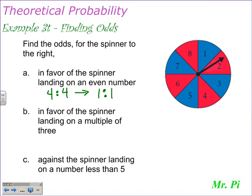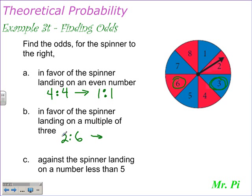In example B, we need to find the odds in favor of the spinner landing on a multiple of 3. The favorable outcomes would be the multiples of 3 — that would be 3 and 6. So that would be two favorable outcomes, leaving us with six unfavorable outcomes. We have a two to six chance, which can reduce: both numbers are divisible by 2, so 2 divided by 2 is 1 and 6 divided by 2 is 3. The odds are one to three in favor of spinning a multiple of 3.